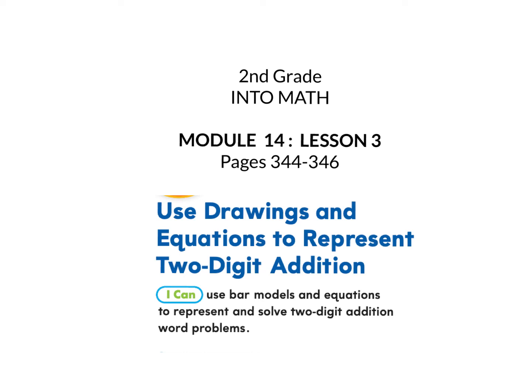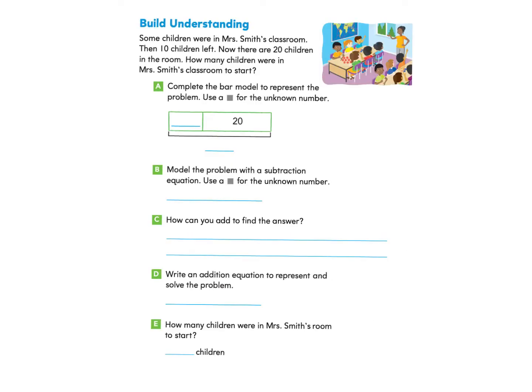This is Into Math for Second Grade, Module 14, Lesson 3. We are going to start on page 344, and we are going to use drawings and equations to represent two-digit addition. The I can statement is: I can use bar models and equations to represent and solve two-digit addition word problems. Please gather your workbook and a pencil and turn to page 344. We will start under Build Understanding.